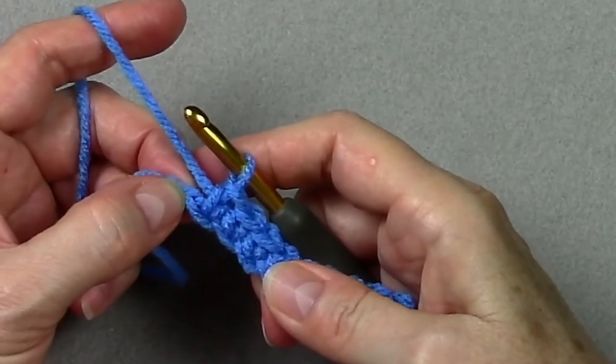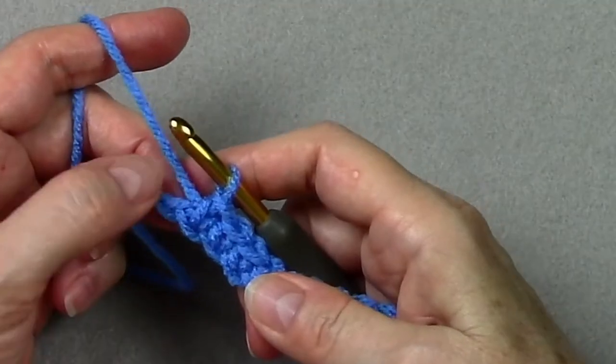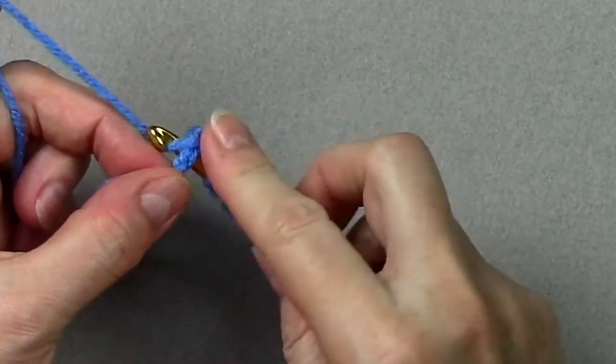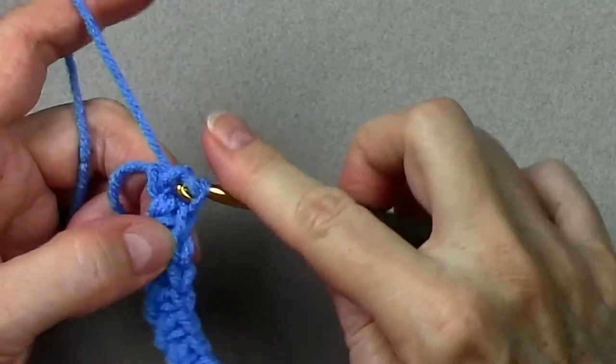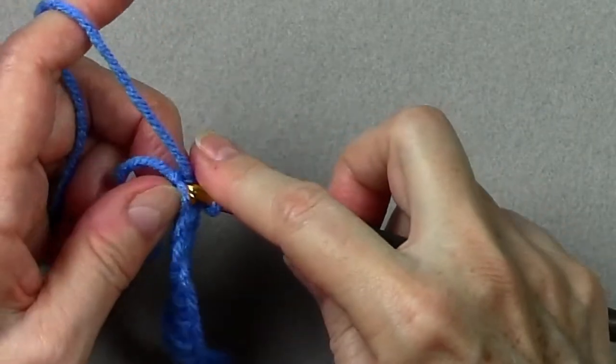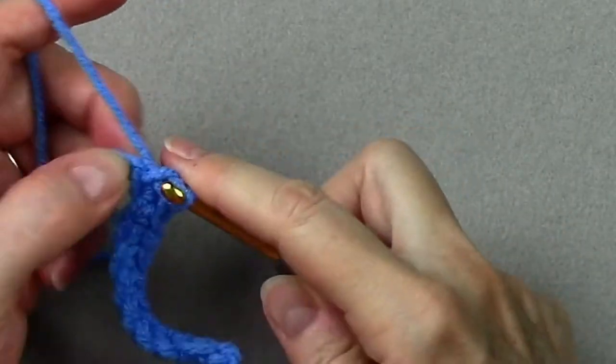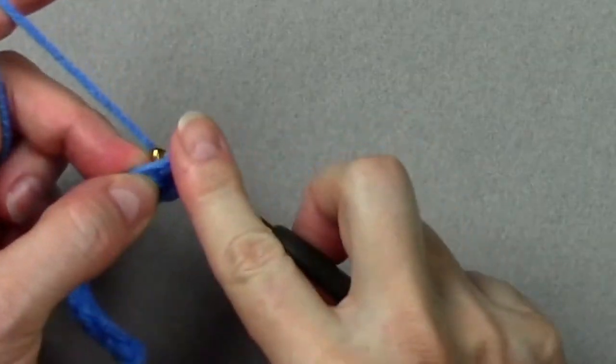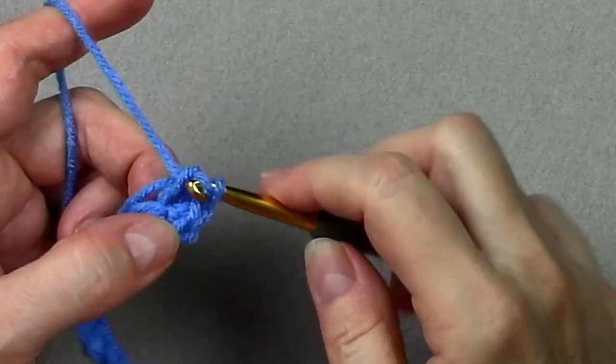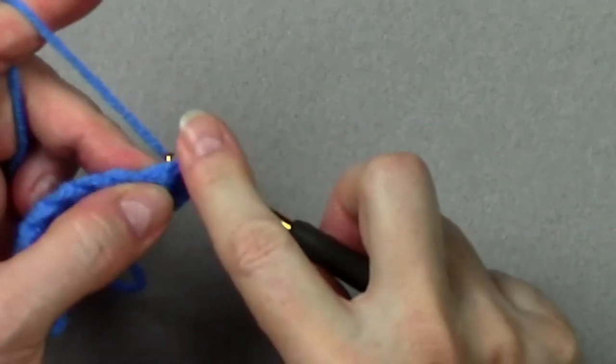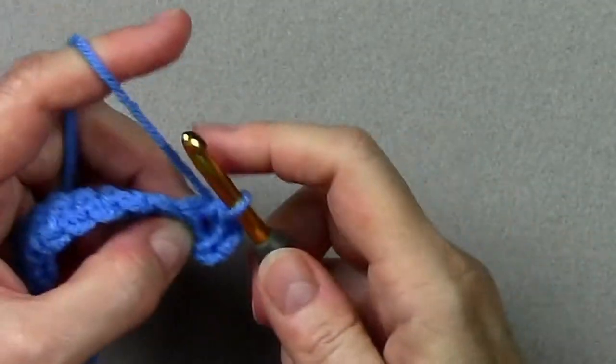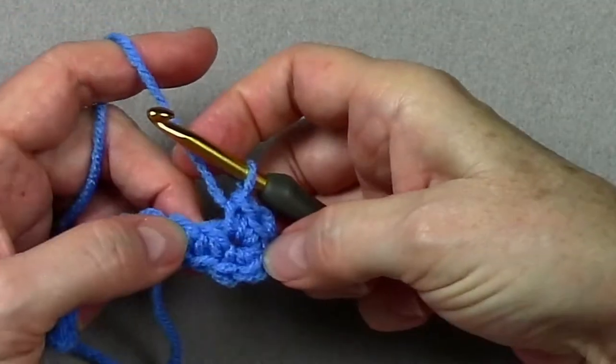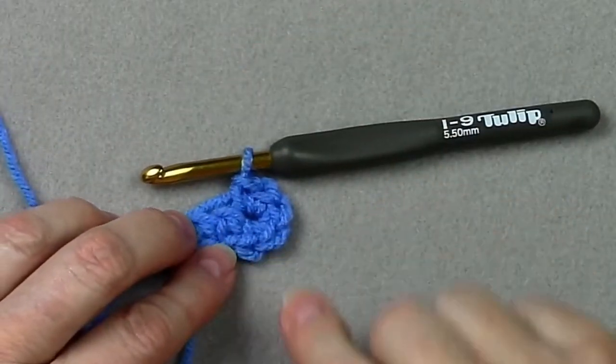And in the last chain I'm going to work all of my increase stitches. So here I'm going to work five single crochets. Your pattern may call for three or four or five single crochets. Or perhaps your first row or round of your oval is worked in half double crochets or doubles. Or it could even be in a combination of the stitches. So just follow the pattern and you'll do fine.